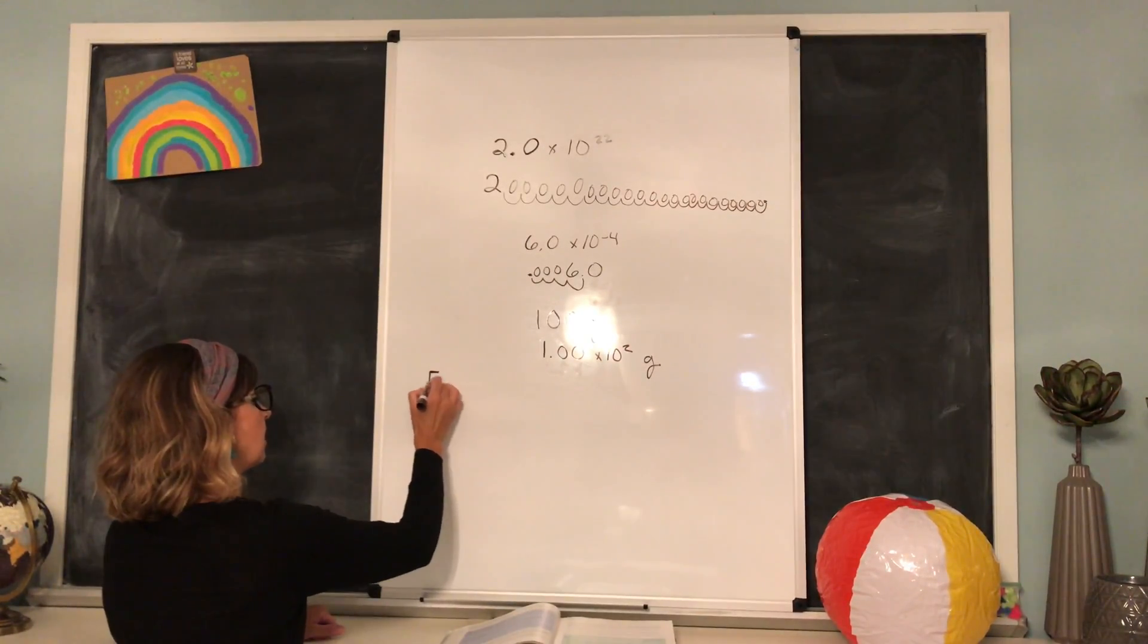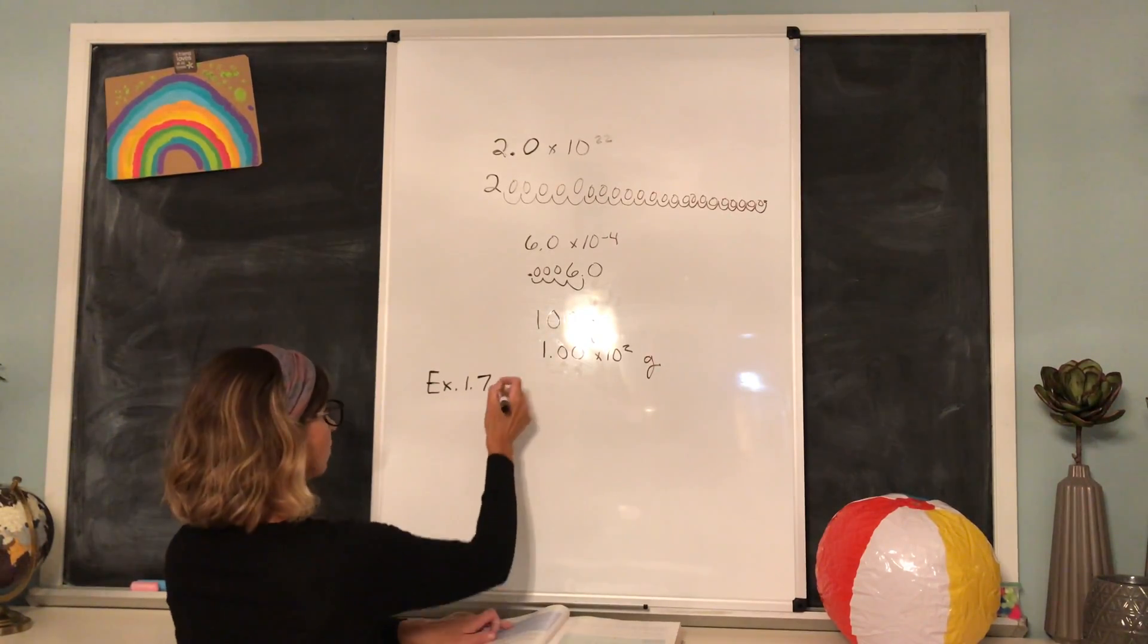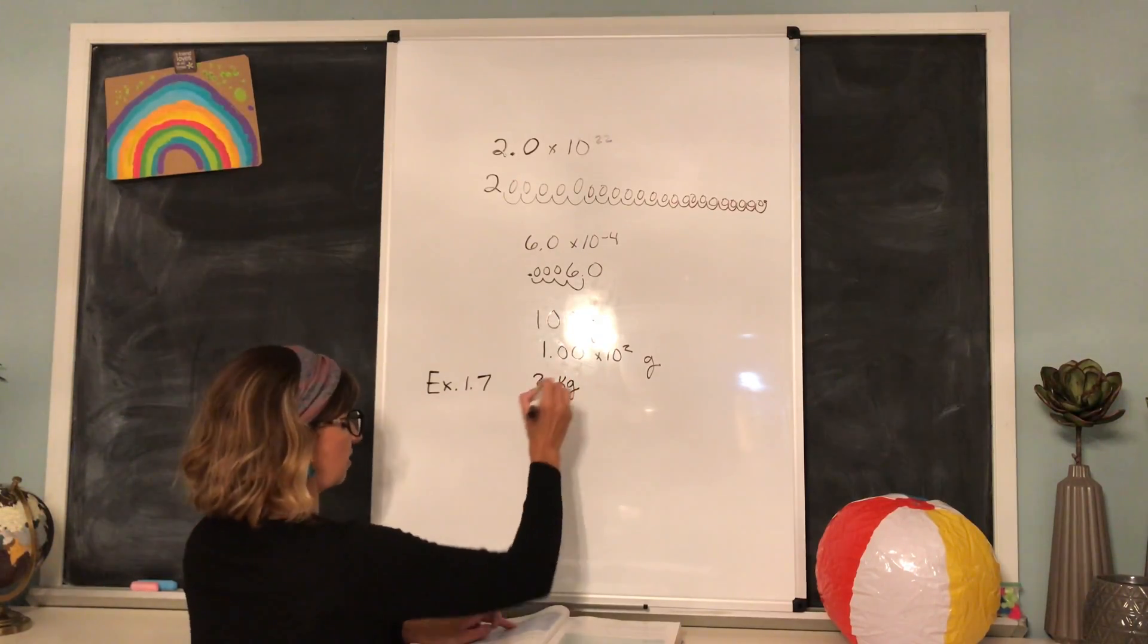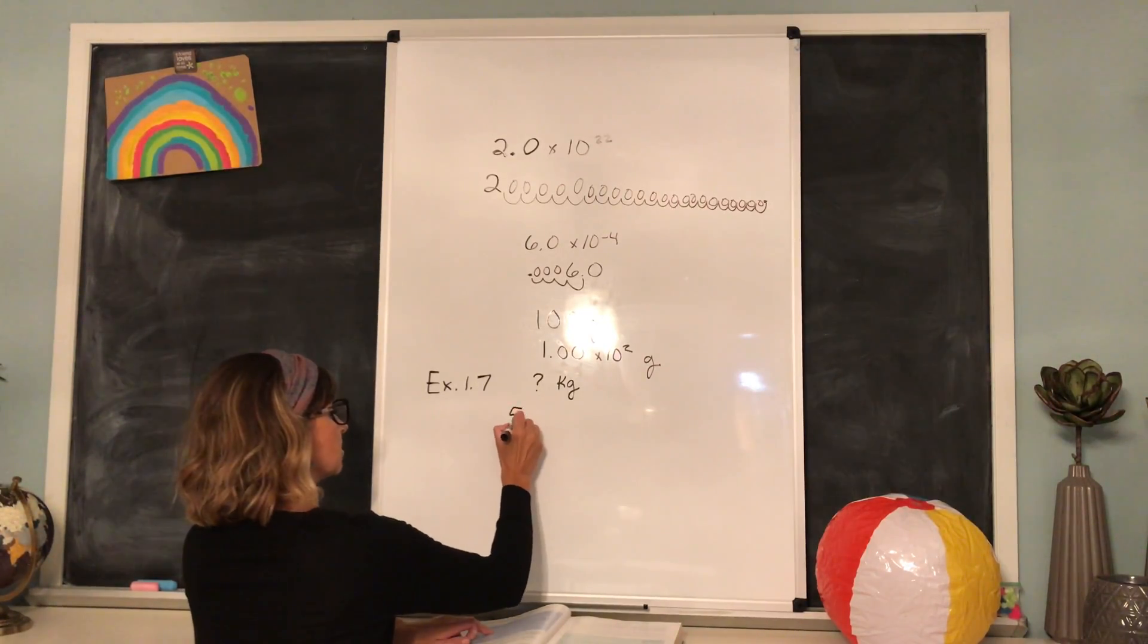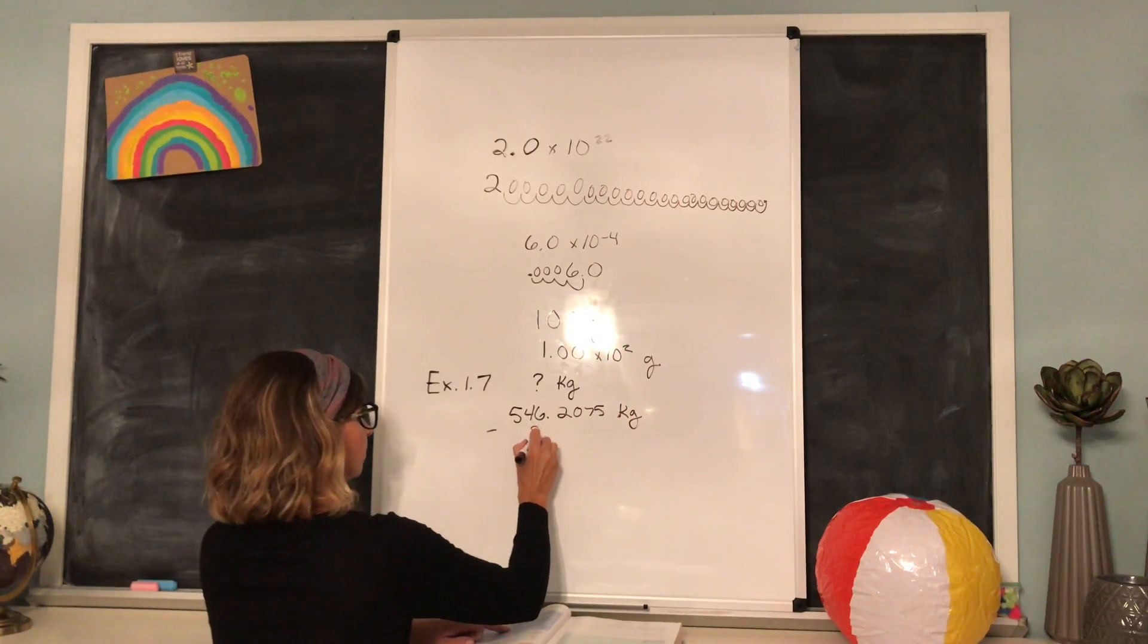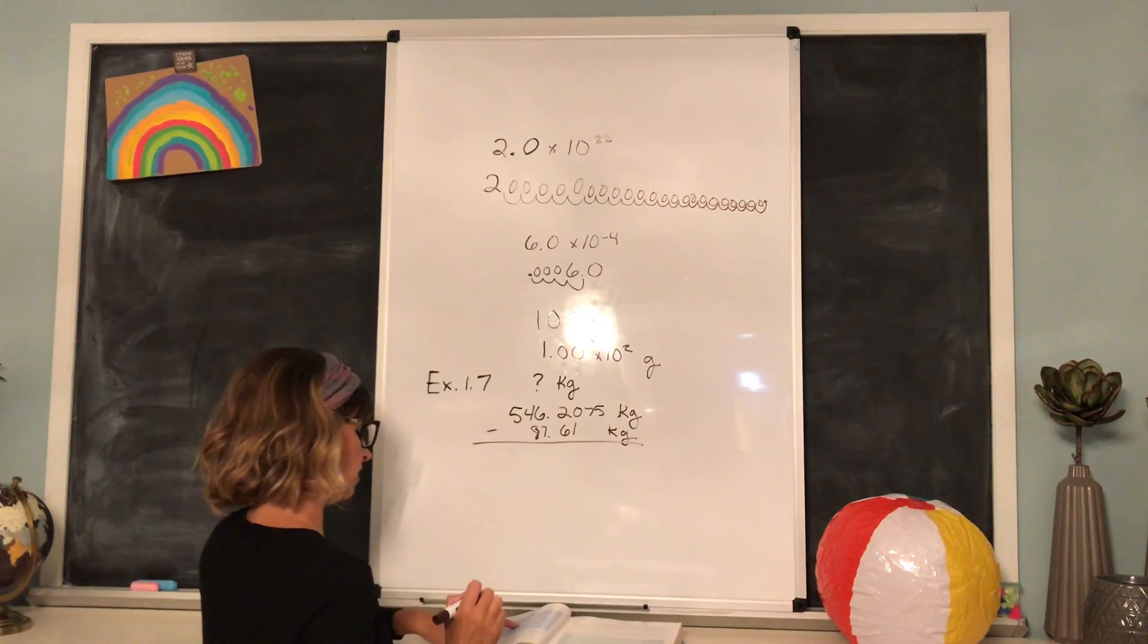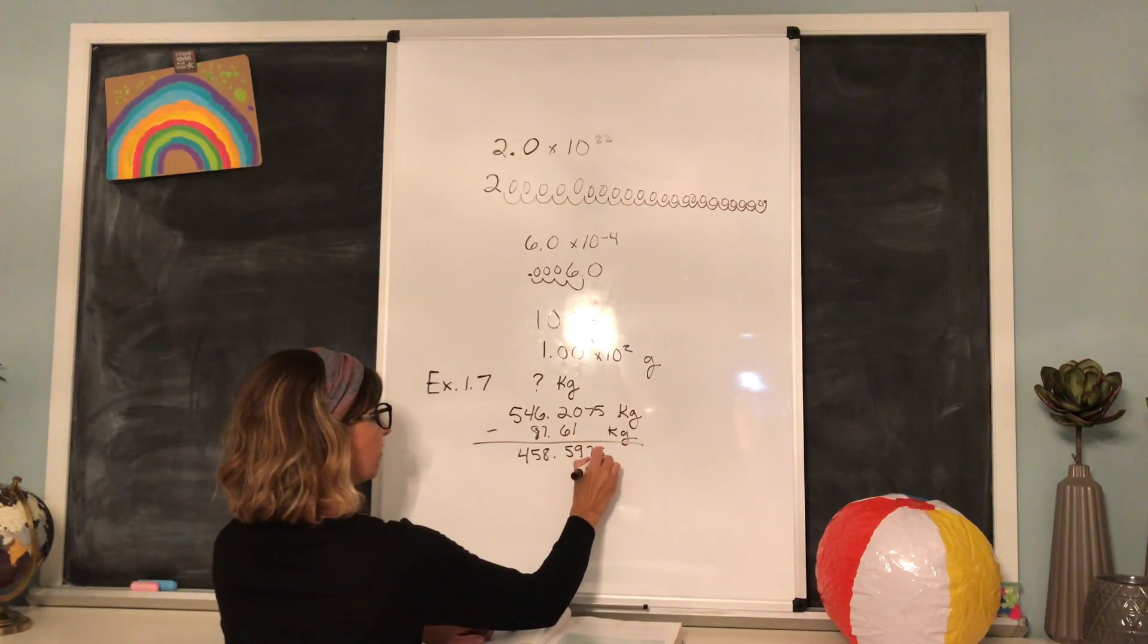This is example 1.7. We are looking for the mass of the sand in kilograms because we are given both masses in kilograms. I'm going to put the subtraction problem on the board. 546.2075 minus 87.61 kilograms. When we subtract that out, we get 458.5975 kilograms.